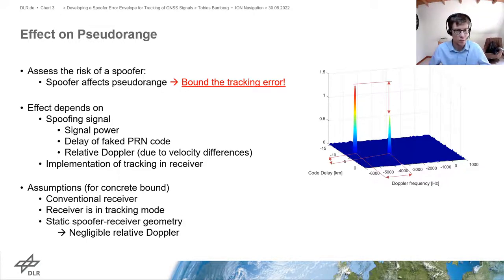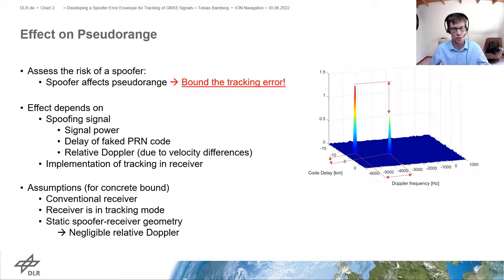In order to define a concrete bound we make some assumptions; however, the method is not limited to these assumptions. We say that we are using a conventional receiver, which means we are using a PLL and DLL structure to track the signals.